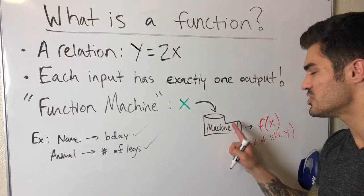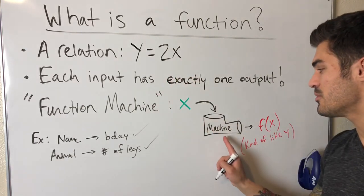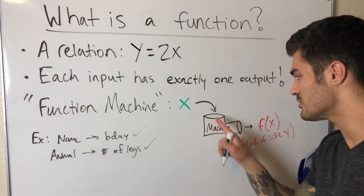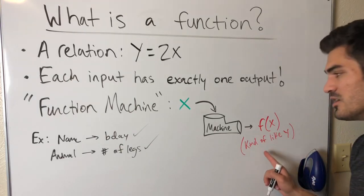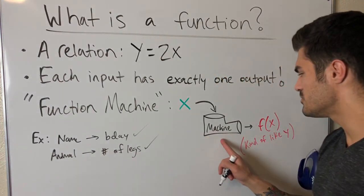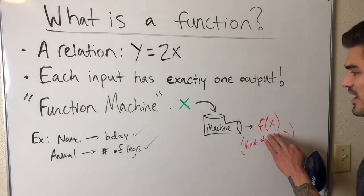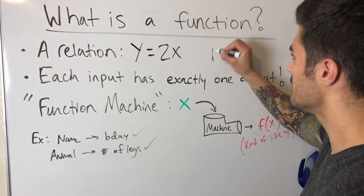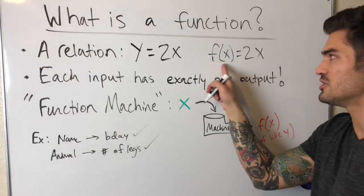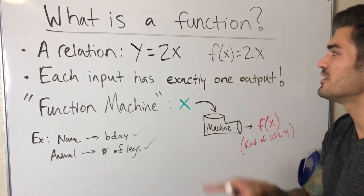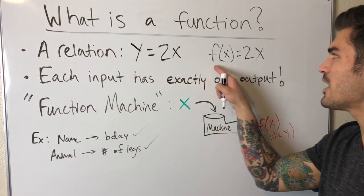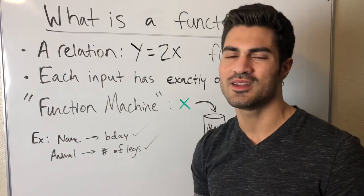With y = 2x, we're putting x into our function machine and multiplying it by two. Each x that goes in gets multiplied by two and spits out that number. You can't multiply something by two and get two different answers — you get one answer. So this is a function, and it can be rewritten as f(x) = 2x. The name of the function is f, and x is the input.